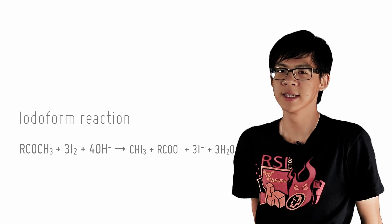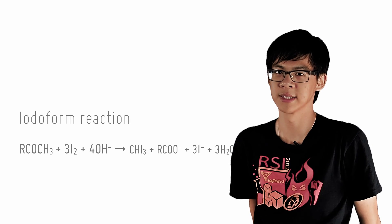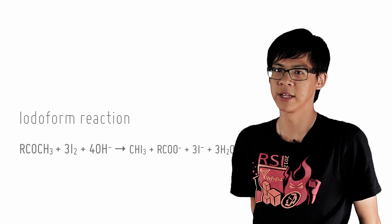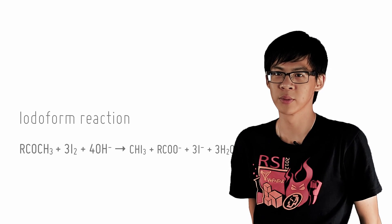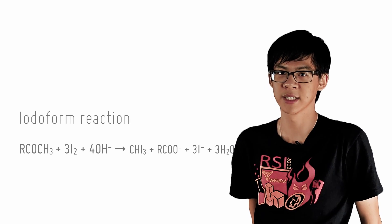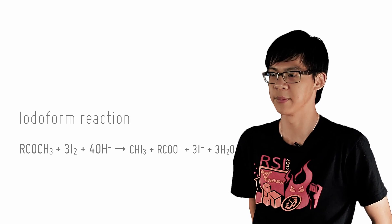Now if you recall from alcohols, we were able to distinguish a special group of alcohols known as the methyl alcohols using what we call the iodoform reaction. We also mentioned that the same reaction can be used to distinguish methyl ketones, which are simply ketones where one of the R groups is a methyl group.